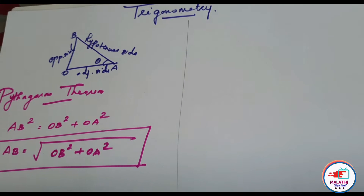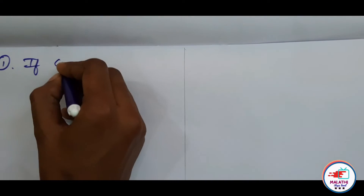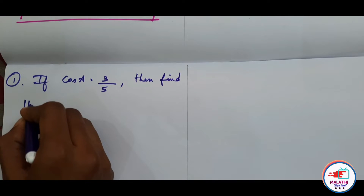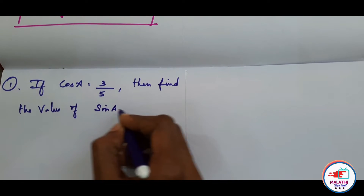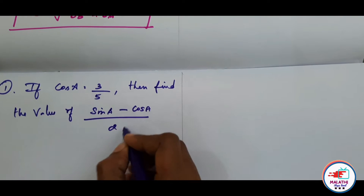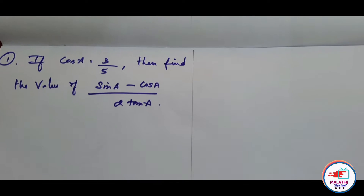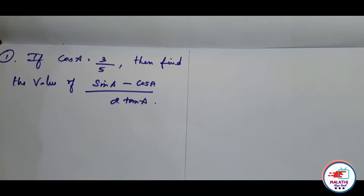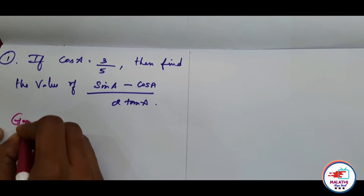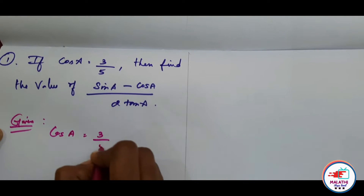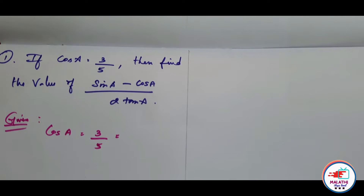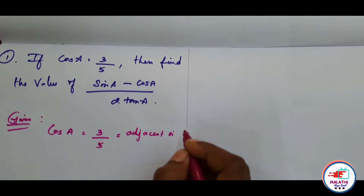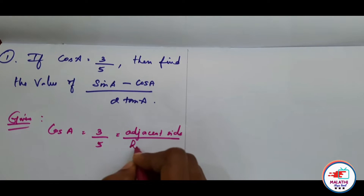In the Pythagoras theorem, the base is 2 and 2. First question: if cos a is equal to 3 by 5, then find the value of sin a minus cos a by 2 tan a. The given value is cos a equals 3 by 5. We have to find sin a minus cos a by 2 tan a. Cos a is nothing but adjacent by hypotenuse side.